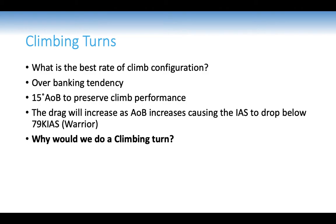Climbing turns: the best rate of climb configuration is full power, attitude with nose on horizon, speed 79 knots, and trim. We have the overbanking tendency and limit to 15 degrees of bank to preserve climb performance. If we bank to 30 degrees, we'd experience so much drag that climb performance suffers — drag increases as angle of bank increases, causing indicated airspeed to drop below 79 knots. We do a climbing turn to simultaneously climb and change heading, for example when departing an airport.